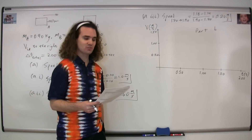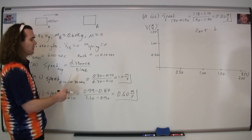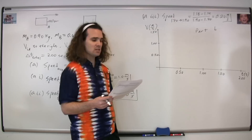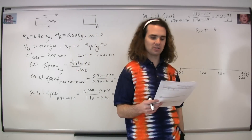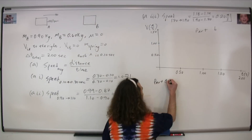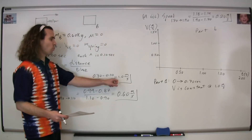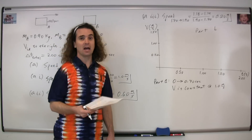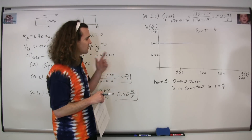For part b, they ask us to draw a sketch of the velocity of cart A as a function of time. We've already figured out the average speeds, so now we graph velocity versus time. We look at three intervals. From 0 to 0.70 seconds, the distance traveled during each 0.10 s is 0.10 m, meaning the velocity is constant at 1 meter per second. So we draw a horizontal line at 1 m/s from 0 to 0.70 seconds.